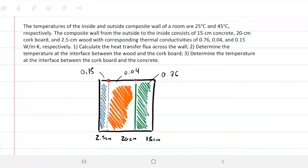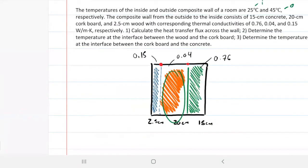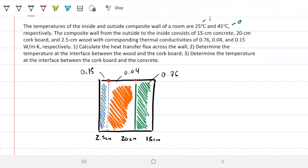Okay, so question number one. The temperature of the inside and outside composite wall of a room are 25 and 45 respectively. So the first thing I did when I was solving this is, okay, so this is outside temperature, this is the inside temperature. The composite wall from the outside inside is concrete, cork board, and wood. So the outside is the one facing the concrete, which is the 15 centimeters. So I drew here concrete, cork board, and wood.